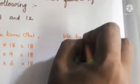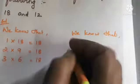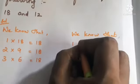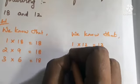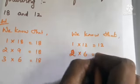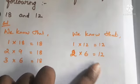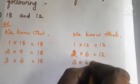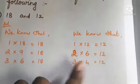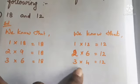Now find the factors of 12 using multiplication: 1 into 12 is 12, so 1 and 12 are factors. Then 2 into 6 is 12, so 2 and 6 are factors. Then 3 into 4 is 12, so 3 and 4 are factors of 12. Tables 5, 7, 8, 9, 10 won't give 12 as a product.